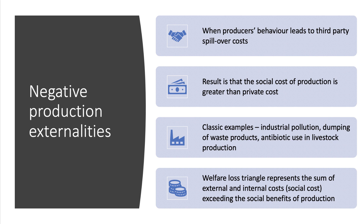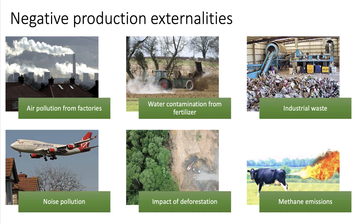To get a top grade, you'll need to show the welfare loss triangle, which is essentially the sum of the social costs exceeding the social benefits of production. Here are some good examples of negative production externalities: pollution, industrial emissions and waste contamination effects including from farming, the impact of deforestation on communities and sustainability, and noise pollution for example from the airline sector. All good examples of external spillover costs.